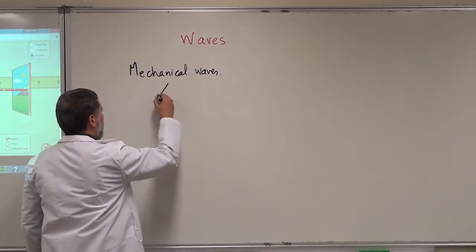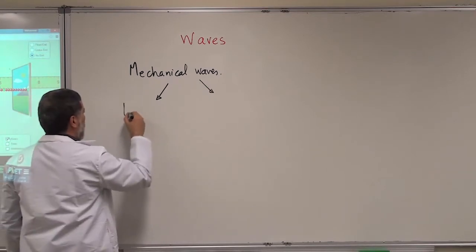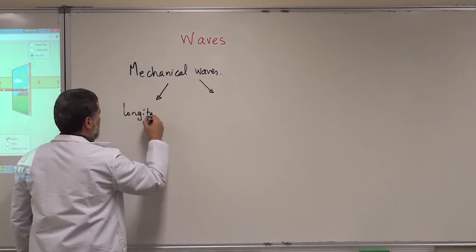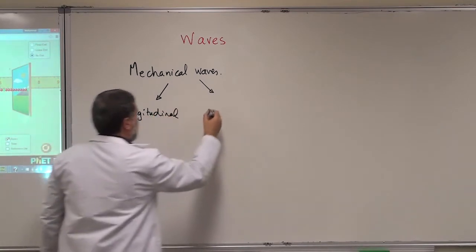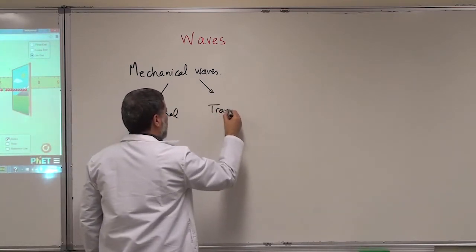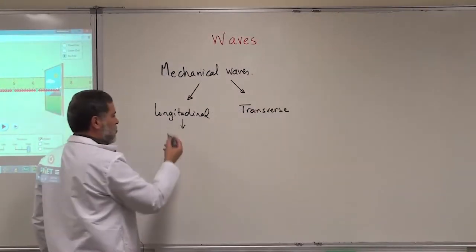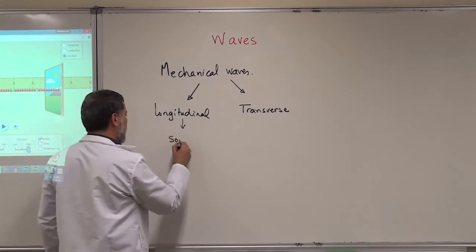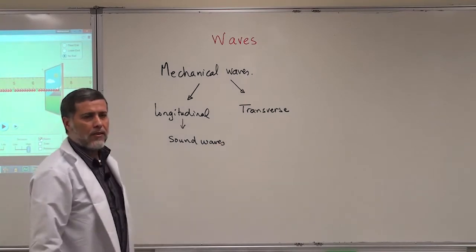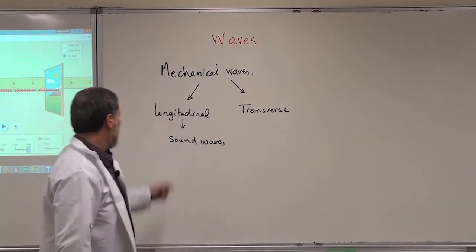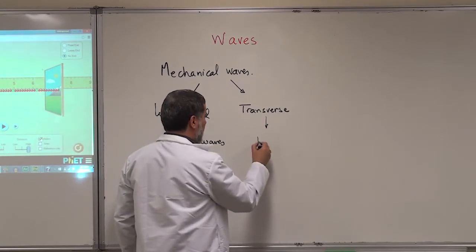There are two types of mechanical waves. We have what we call longitudinal waves and what we call transverse waves. An example of a longitudinal wave is sound waves — they need a medium and a source of disturbance. An example of a transverse wave is waves on strings.